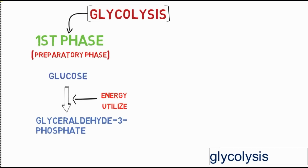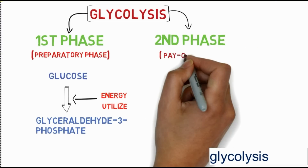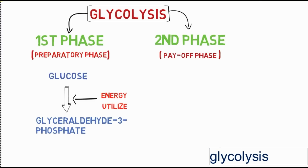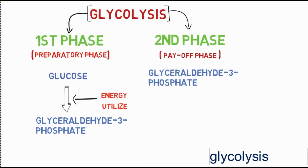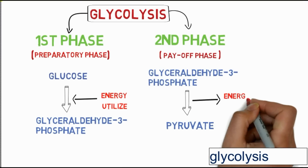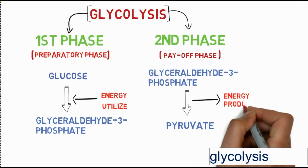The second phase is also called the payoff phase of glycolysis. In the payoff phase, glyceraldehyde-3-phosphate is further broken down and converted into pyruvate, and energy is being released.